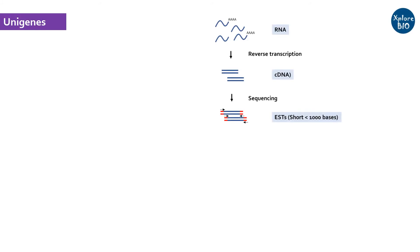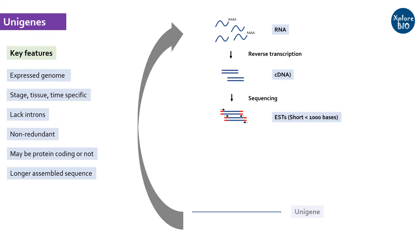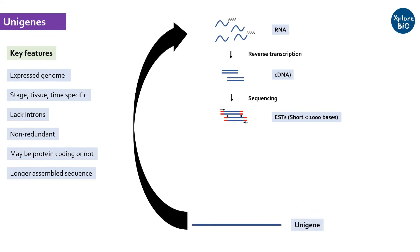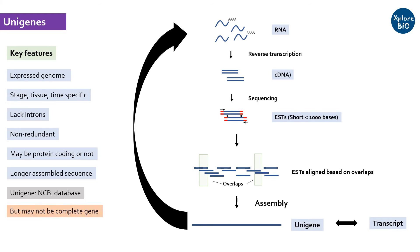Unigenes overcome the above limitations of ESTs. A unigene corresponds to a unique RNA or an isoform of a gene expressed. When ESTs are assembled to get a non-redundant or unique sequence, it may be referred to as a unigene. In recent years, the use of the term unigene has been replaced by the more common term transcript. Unigene is also a database of NCBI which comprises non-redundant clusters of expressed sequences belonging to a unigene.